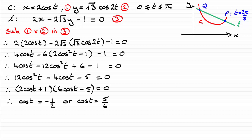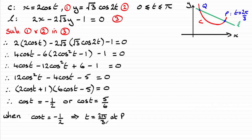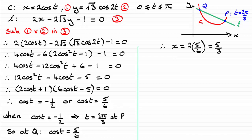With cos t equaling negative 1 half, taking the inverse cosine gives t equal 2 pi over 3, which is the value at P. So at Q, cos t must equal 5 sixths. I don't need to work out the actual value of t — I can substitute 5 sixths directly into equation 1 to get the x-coordinate of Q.